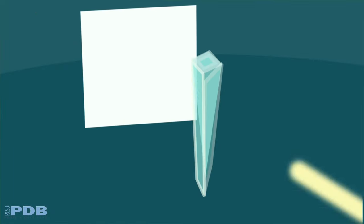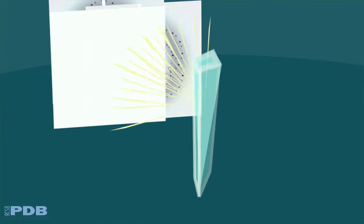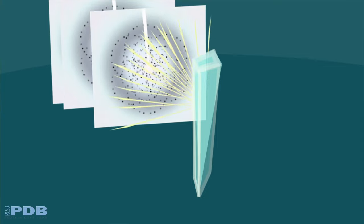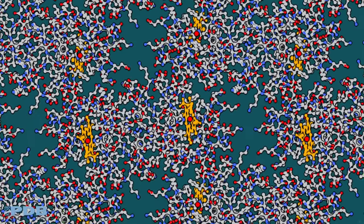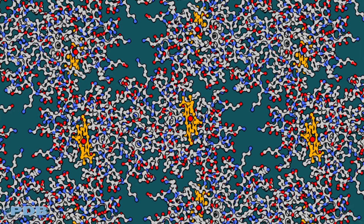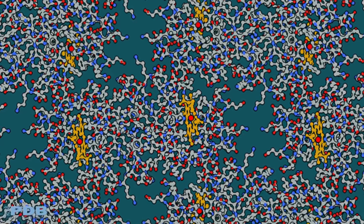When an X-ray beam strikes the crystal, the X-rays scatter into a distinctive pattern of spots. These X-ray diffraction patterns are then analyzed to determine the positions of atoms in the protein.